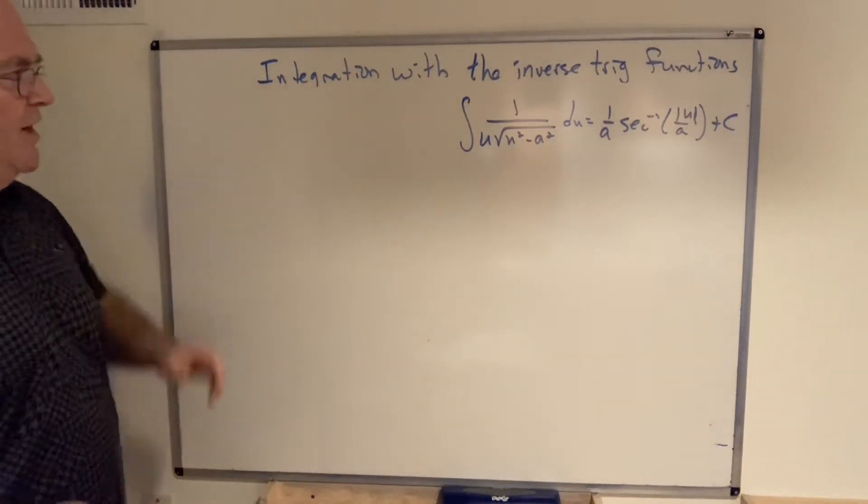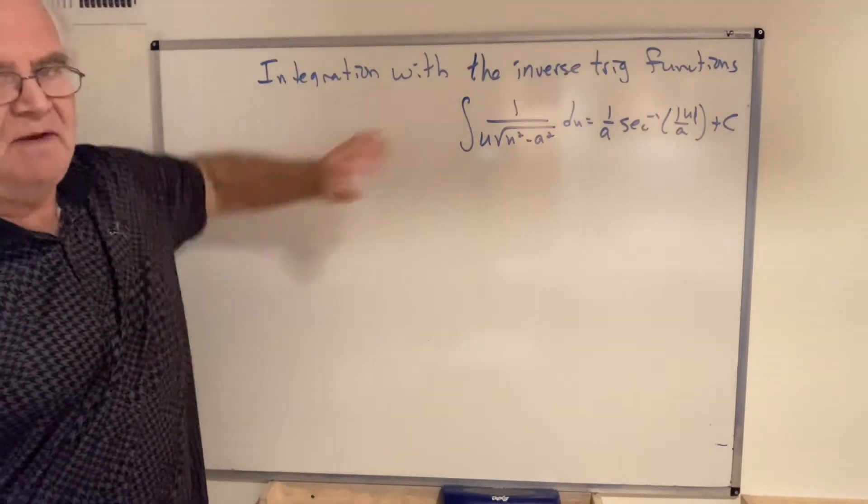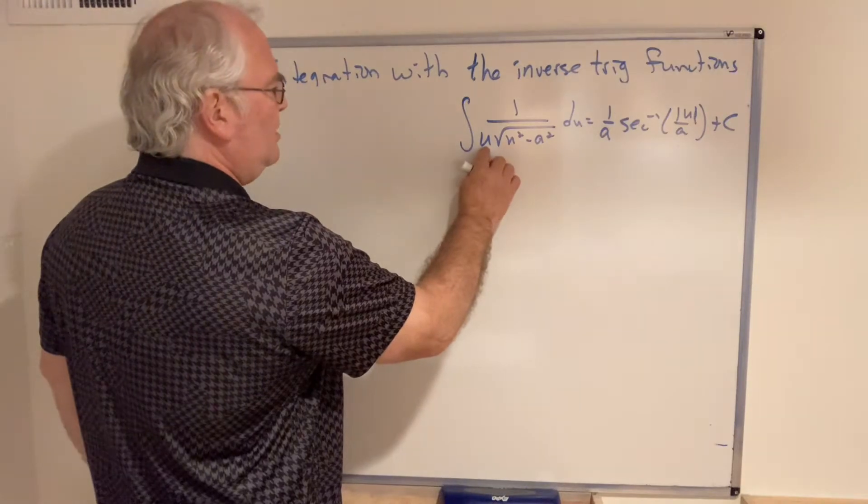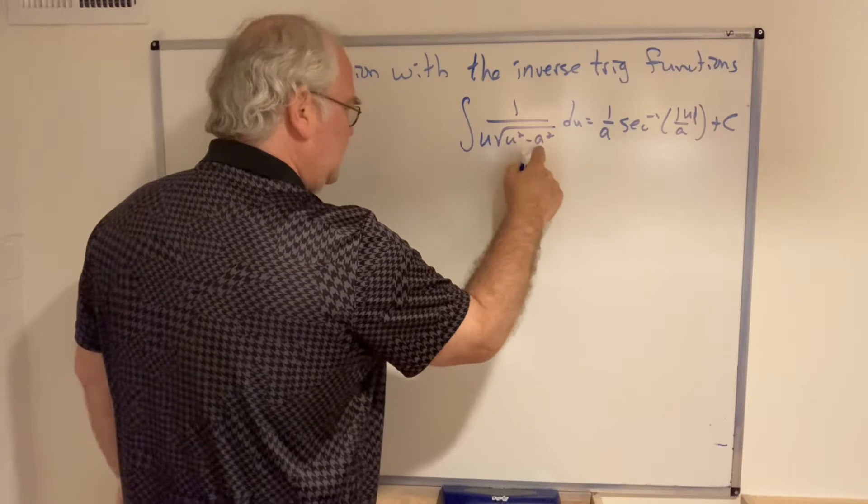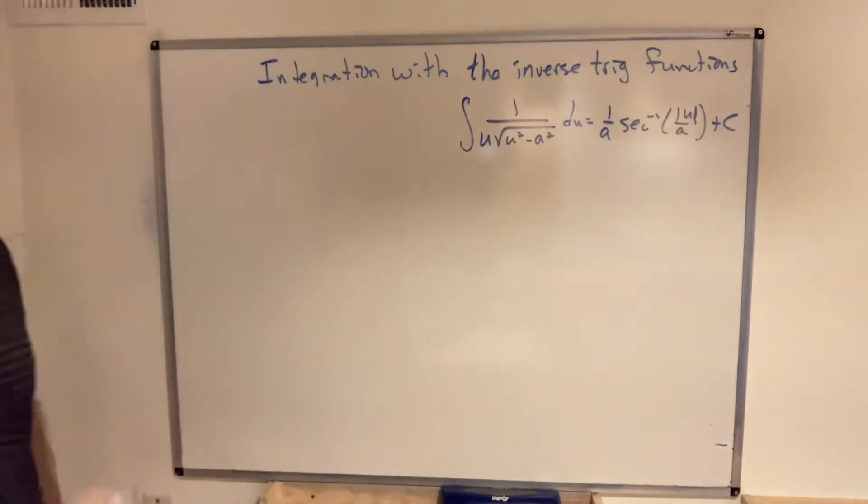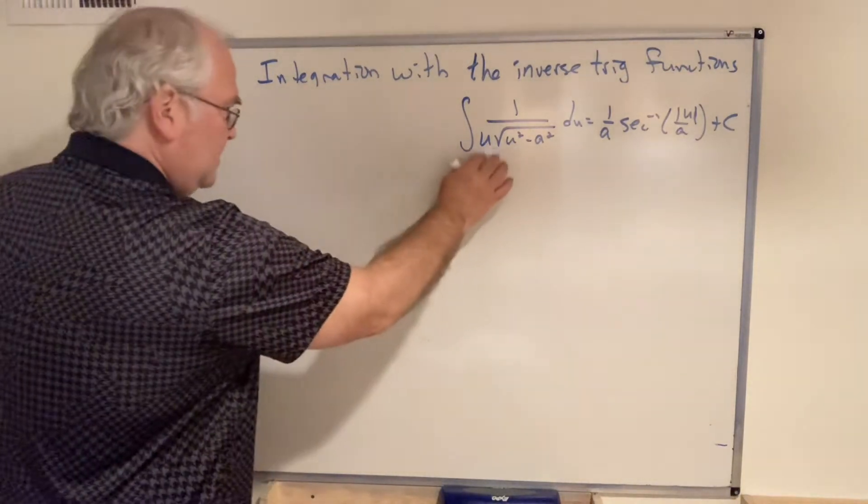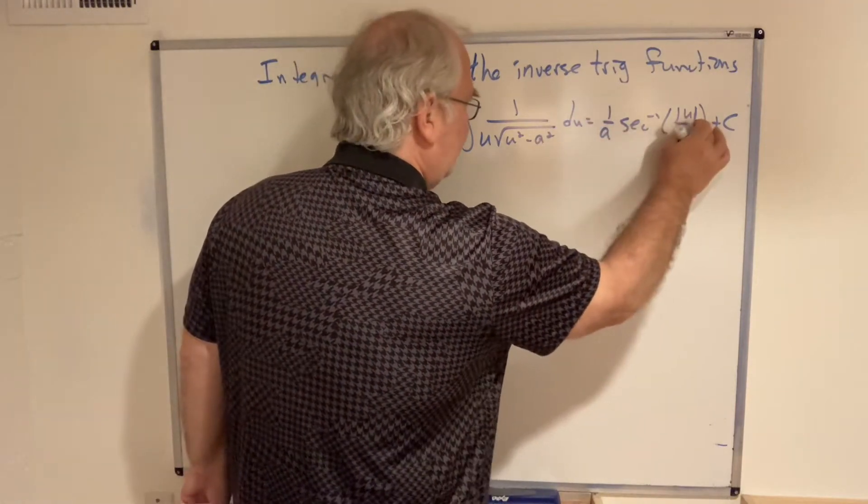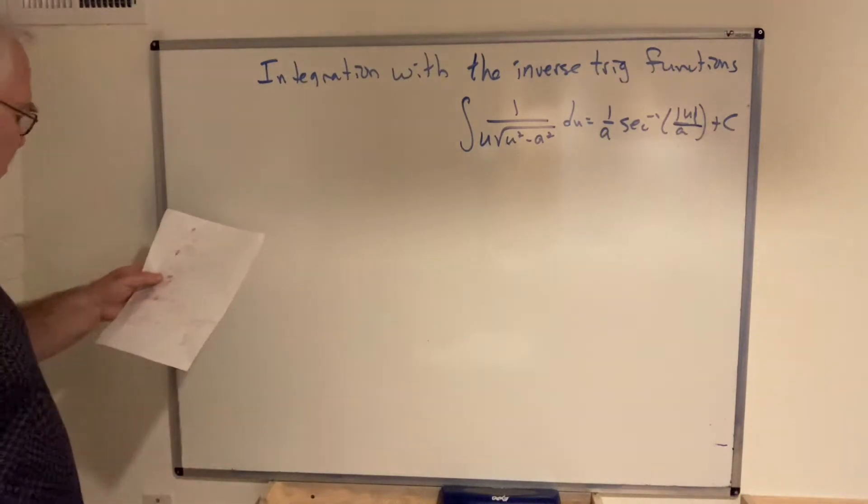Our last two examples of integration with the inverse trig functions deal with the secant inverse form. Remember this has the extra factor of the variable in front and also needs to be variable squared minus constant squared inside the radical. If it's not, then something else needs to be done—you'll handle that in calc 2. But if it is this form, then this is the secant inverse form and the result has 1 over a. Secant inverse has the absolute value present.